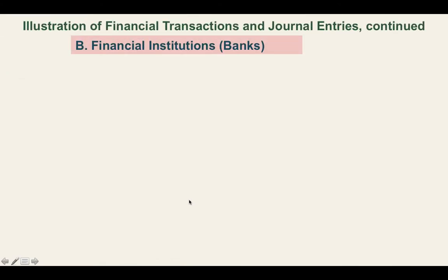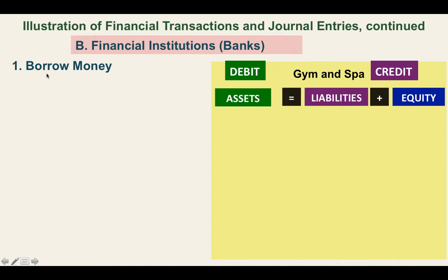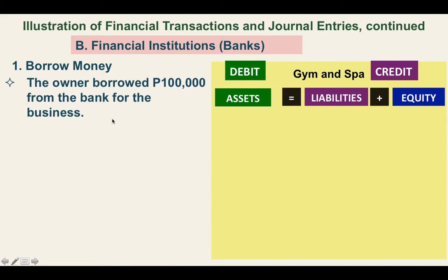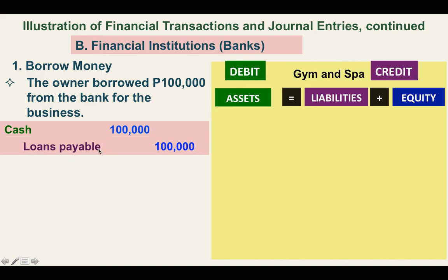Next, we discuss the transaction with a financial institution or bank. Our financial transaction is: we will borrow money from the bank. The owner borrowed $100,000 from the bank for the business. What will the business receive? Cash of $100,000. What did the business give? The business gives its promise to pay the $100,000, and in accounting that promise to the bank is called loans payable.